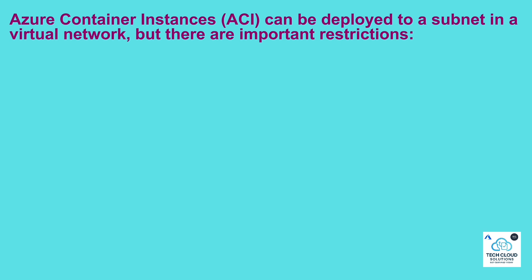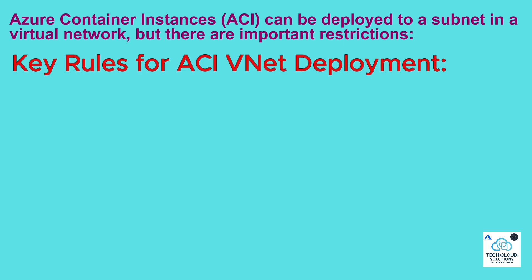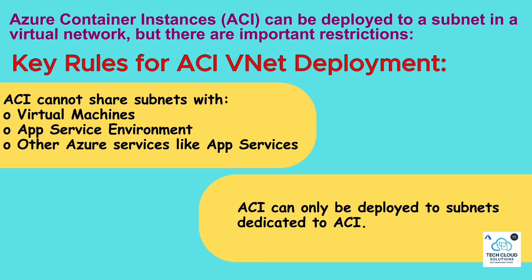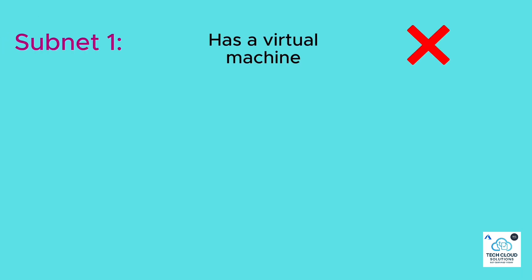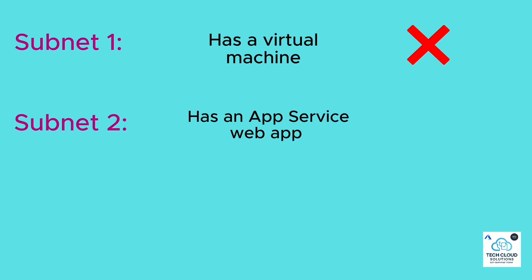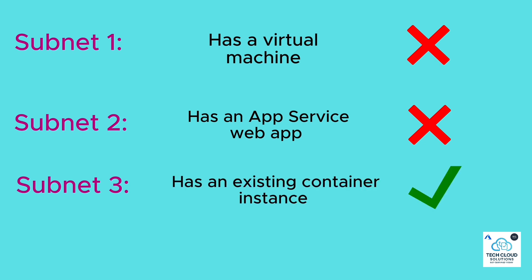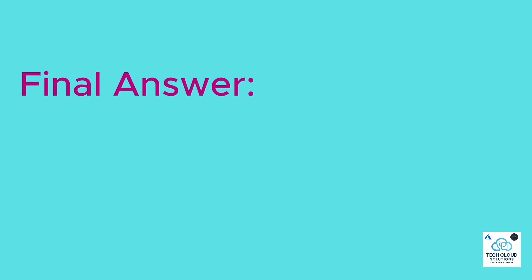Correct answer: Subnet 3 only. Azure Container Instances (ACI) can be deployed to a subnet in a virtual network, but there are important restrictions. Each subnet in a VNet can contain only one type of resource deployment for certain services like ACI. If a subnet already has an App Service Environment, container instance, or other special resource type, it cannot host another incompatible type. ACI can only be deployed into subnets specifically available for container instances. Subnet 1 has a virtual machine — not ideal for ACI, may cause conflicts. Subnet 2 already contains App Service — not compatible. Subnet 3 already has a container instance — valid for more ACI deployments if capacity permits. Final answer: Subnet 3 only.